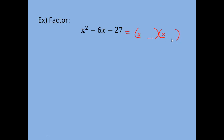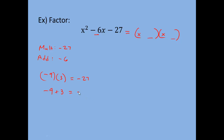We need to figure out how to fill in our blanks. We need numbers that multiply to c, which is negative 27, and also add to the middle coefficient, which is negative 6. Let's try negative 9 and positive 3: negative 9 times 3 gives negative 27, and negative 9 plus 3 equals negative 6. These numbers are always unique — there is only one way to multiply to negative 27 and add to negative 6. So the factored form is x minus 9 times x plus 3.